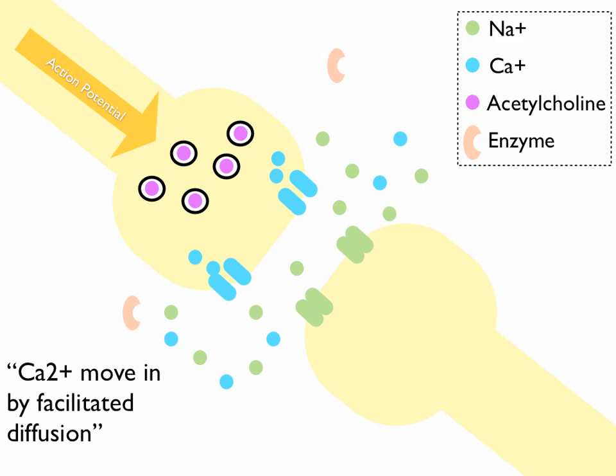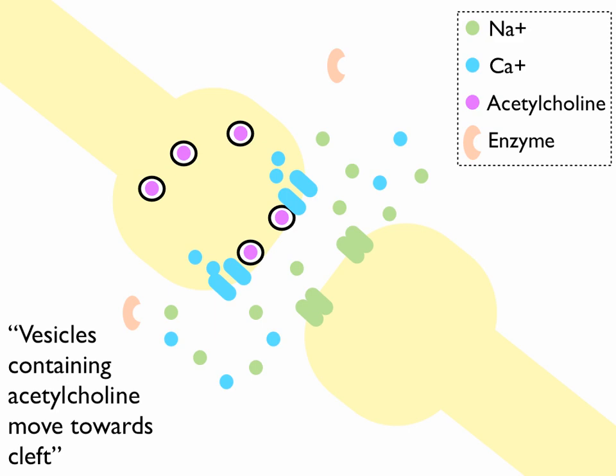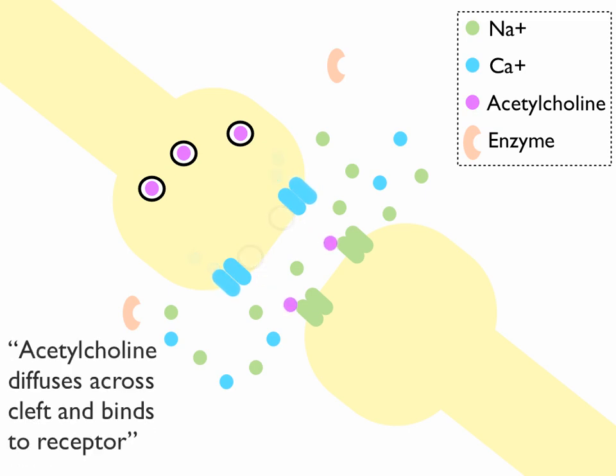And this causes those acetylcholine-containing vesicles to start to move towards the synaptic cleft. And what they do is they release the acetylcholine into the cleft by a process called exocytosis, where the vesicles combine with the membrane and release all their contents into the cleft itself. So here we go. There they are.